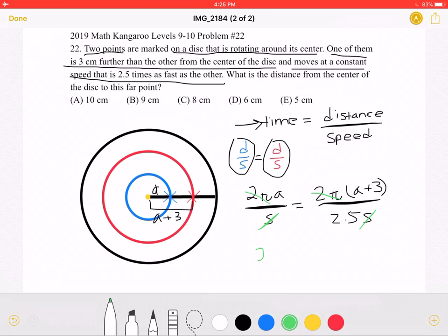So we would get that 2.5 A is equal to A plus 3. And if we solve, we will get that A is equal to 2.